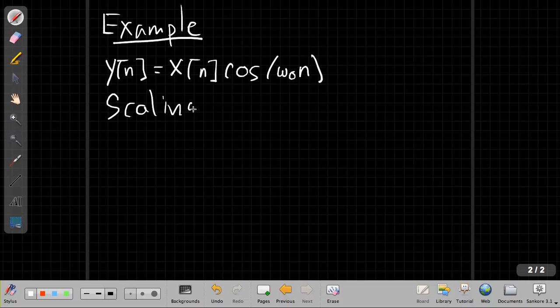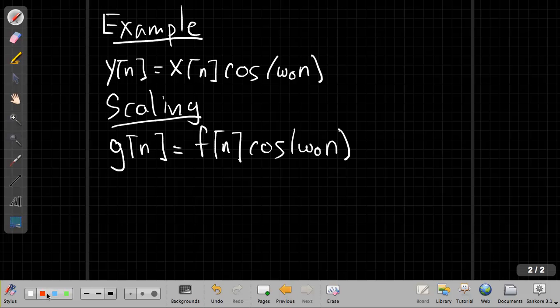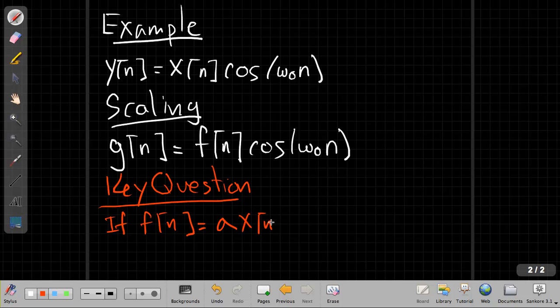So let's start with scaling. I'm going to say, well if I had a different input f of n and the output were g of n, then that output g of n would be the new input f of n times cosine of omega n. And then the key question, and again I'll put this in red as I did in the time invariance video, is for linearity, or for scaling rather.